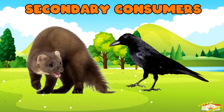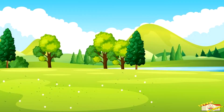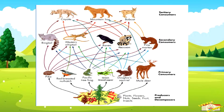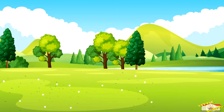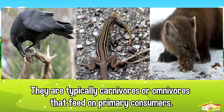Secondary consumers are organisms that occupy the third trophic level in a food web. They are typically carnivores or omnivores that feed on primary consumers.